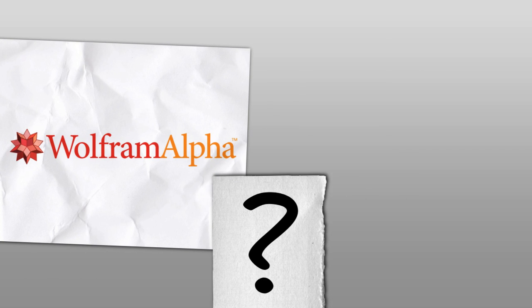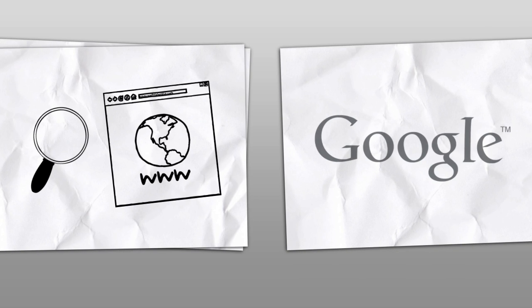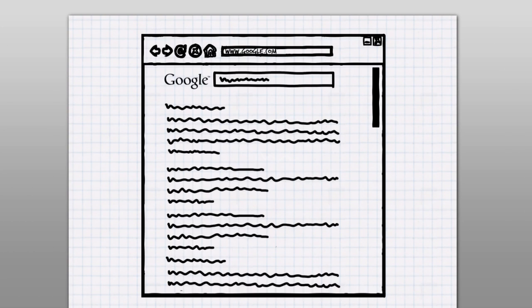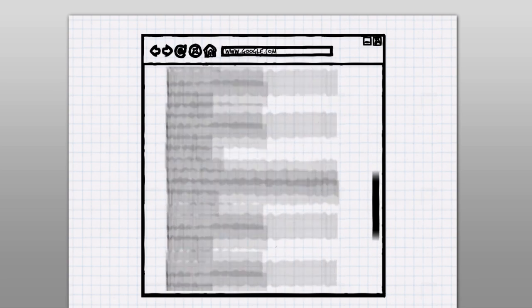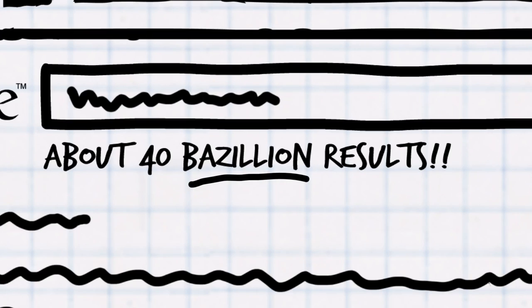But you might be wondering, how is Wolfram Alpha different from Google? Well, Google searches the web, seeking out web pages that relate to what you typed. From there, for the most part, it's your job to find the information you need.